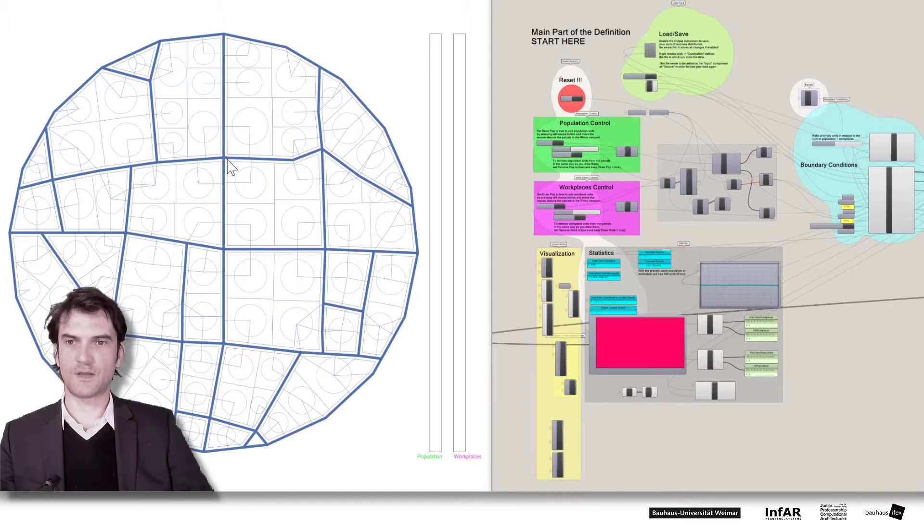And the lines, now they are all blue because we don't have any land uses distributed, means we don't have any traffic. Nobody is going from A to B. And blue means the least number of traffic, in this case zero traffic.